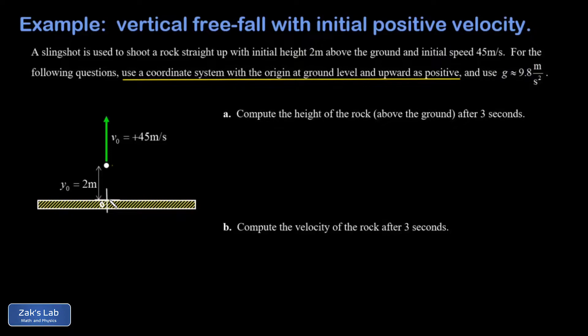So in part a we're just trying to get the height of the rock after three seconds. And the height of the rock as a function of time is given by our kinematics equation y equals y naught plus v naught t plus one half a t squared.